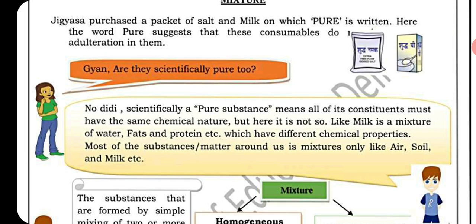A scientifically pure substance means all of its constituents must have the same chemical nature. But here that is not so — milk, for example, is a mixture of water, fats, and proteins which have different chemical properties. Most of the matter around us is a mixture only, like air.